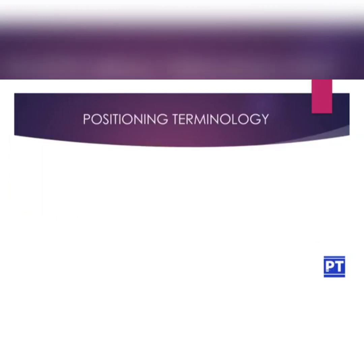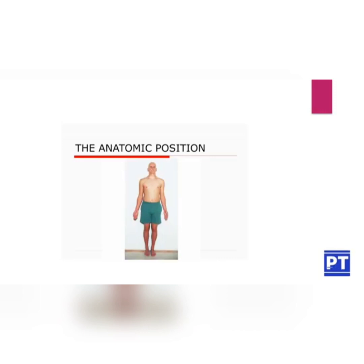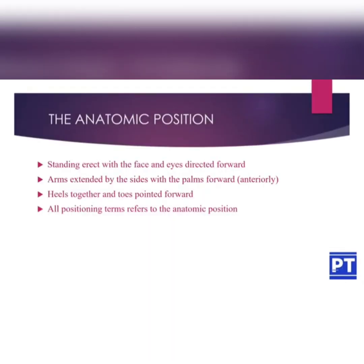The anatomic position of the human body is standing erect with the face and eyes directed forward, arms extended by the side with the palms facing forward anteriorly, heels together and toes pointed forward. All positioning terms refer to the anatomic position.